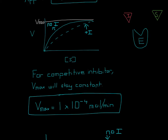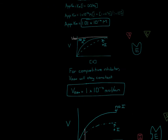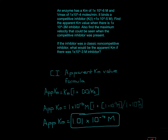You can memorize that for a competitive inhibitor, Vmax will stay constant. Or think of it conceptually: with enough substrate, the substrates overpower the inhibitor to the point where it's almost not present, giving the same Vmax as zero inhibitor. Moving on to the second part of the question: if the inhibitor were a classic non-competitive inhibitor, what would be the apparent Km with 1×10⁻³ moles of inhibitor?